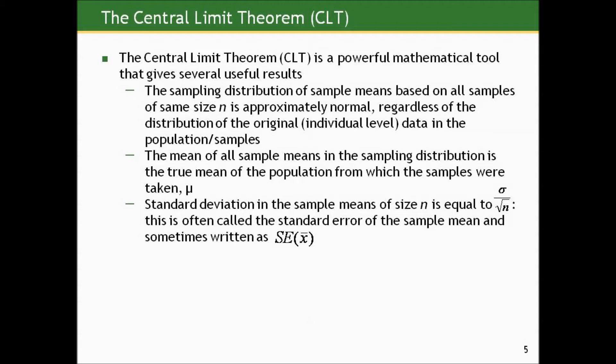The CLT also gives an explicit formula for the standard deviation in the sample means of size n. It says it is equal to sigma — the true standard deviation of individual values in the population — divided by the square root of n. This quantity is called the standard error of the sample mean, sometimes written as SE with an x-bar in parentheses. This tells us everything we need to know about the sampling distribution without doing simulations: it's going to be normal, centered at the true mean, and here's what the spread is.